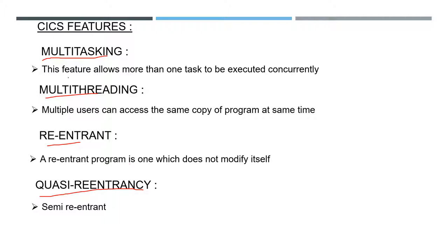Multitasking means it allows more than one task to be executed concurrently. We can execute multiple tasks at the same time — like if the system is processing the input of one user, it can take the input of another user simultaneously.